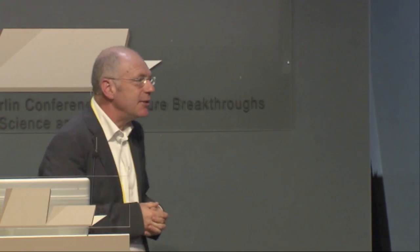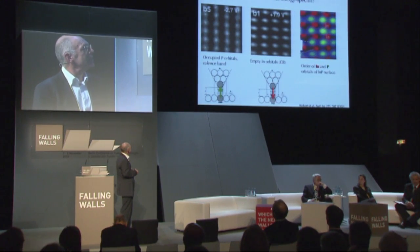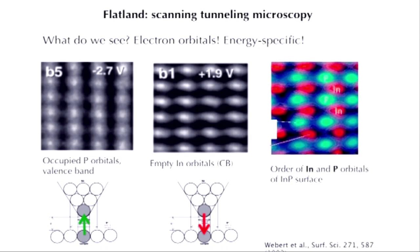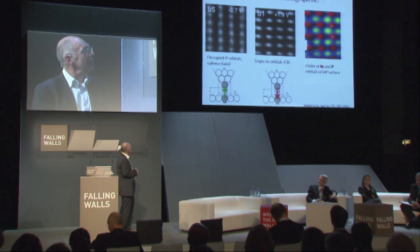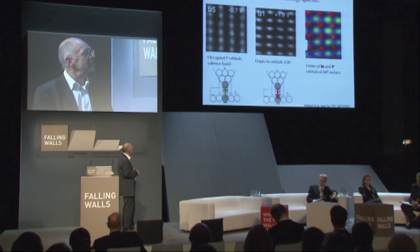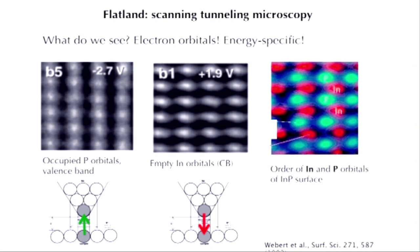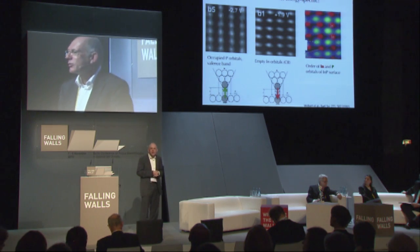Let's look at an important surface — this is an indium phosphate semiconductor surface, important in the optoelectronic industry. We start with a potential difference of 2.7 volts between the tip and the sample. What we then see in the tunneling current is an ordered array, but that's not the atoms as we have seen before — we see only half of the atoms. On the other hand, if we change the bias to positive values, we suddenly see a totally different pattern: white blobs in another direction. And if we combine them, we get something like an indium phosphate surface, but we don't see atoms at all.